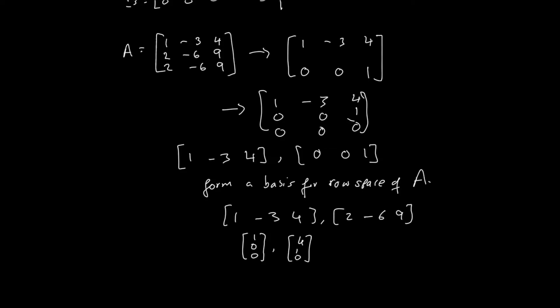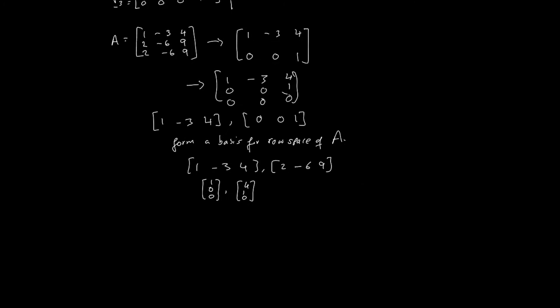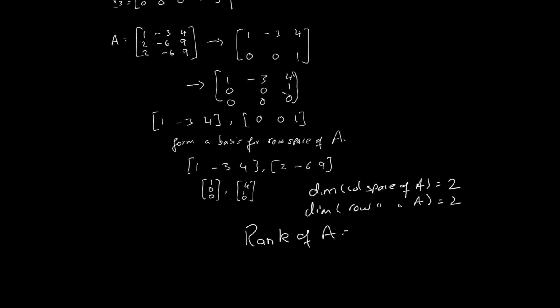Now let's go to the concept of dimension. The dimension of the column space of A in this particular example is 2, since there are two vectors. And the dimension of the row space of A is also 2. In general, it's always true that the dimension of the column space and the row space of any matrix A are always equal. This gives birth to the definition of the rank of A: the rank of A equals the dimension of the column or row space of A. So in this case, the rank of A is equal to 2.